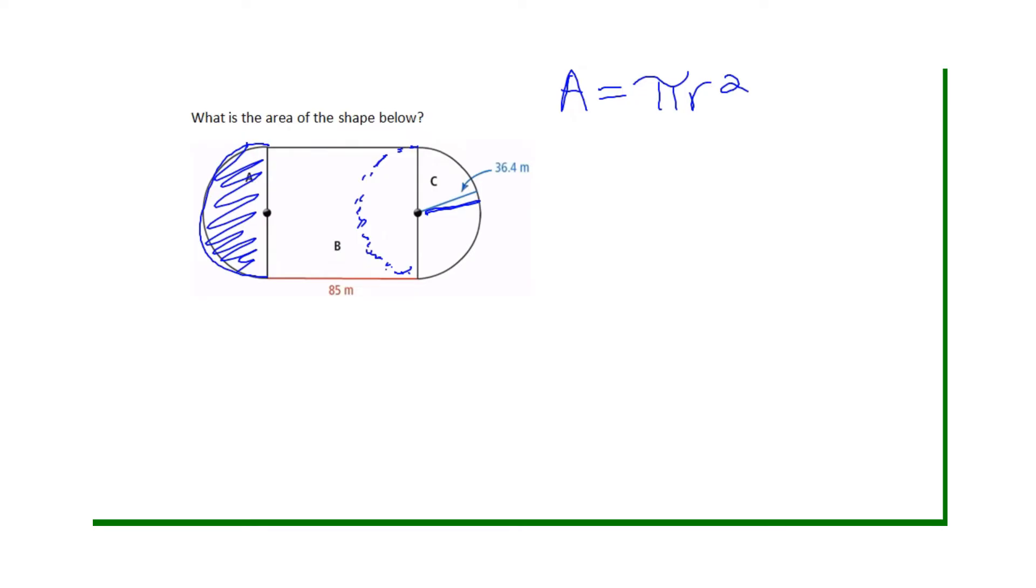So now all we have to do is substitute. In this case we're going to use 3.14 for pi. We're going to substitute 3.14 for pi and 36.04 in for my radius.